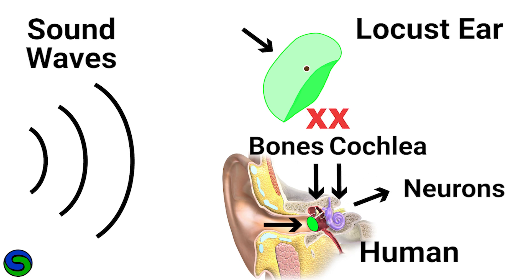Insects do not have bones nor a cochlea. The neurons are directly connected to the tympanal membrane.